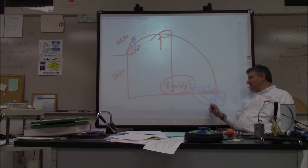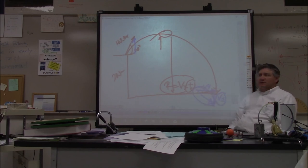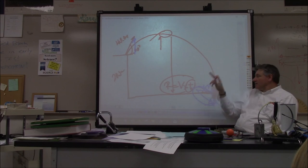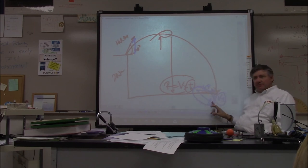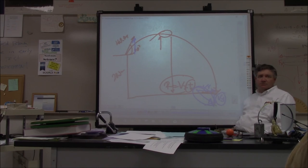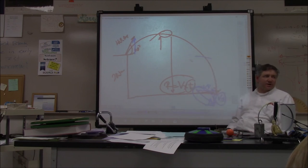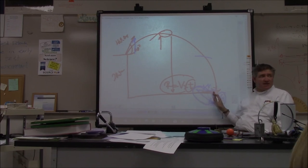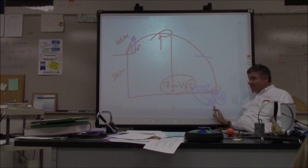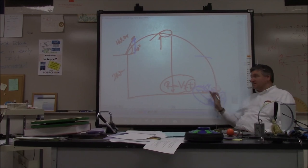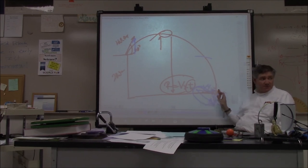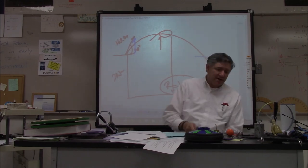So you're finding the speed, which is the resultant of Vx and Vy at landing. You launched at 40 m/s — when it lands, is the speed bigger or smaller than 40? Bigger. Because Vy is bigger at landing and Vx hasn't changed, the overall landing speed must be bigger than 40 meters per second.